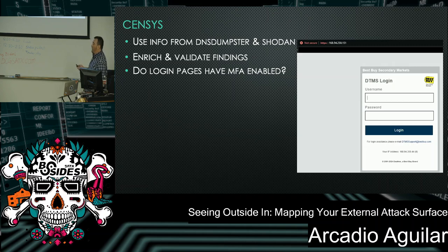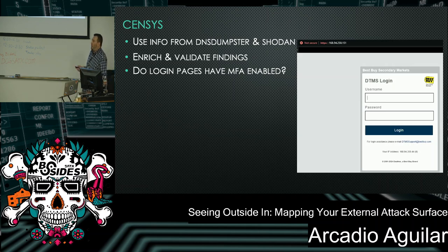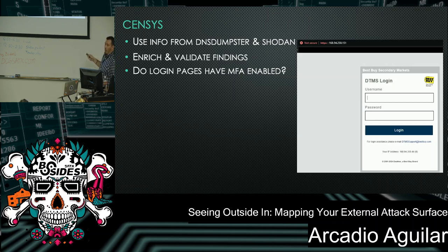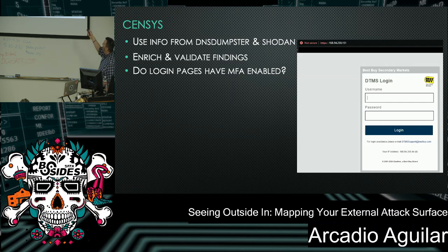We can enrich and validate findings. The DT Deals domain from DNS Dumpster — I used Censys to verify that Best Buy really owns it, and they do. Censys gives you all the DNS records for DTDeals.com and the software technology as well. I verified it against DNS Dumpster — yes, the same asset uses ColdFusion. On the login pages: clicking one takes you directly to the login page and raises security questions — do we have detection for brute force attempts? Can we block that IP? Is multi-factor authentication prompted? Are there known CVEs for this third-party vendor?